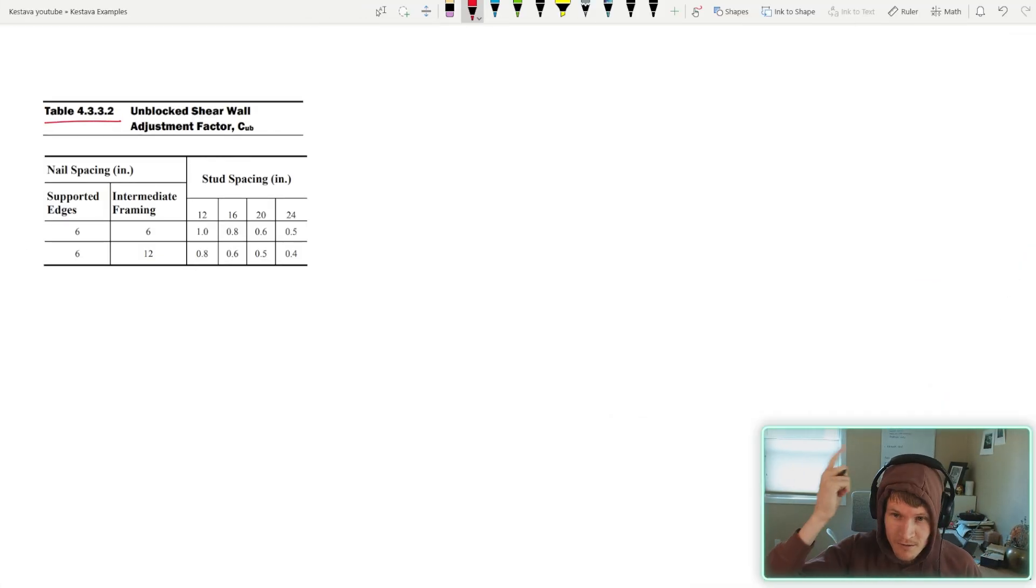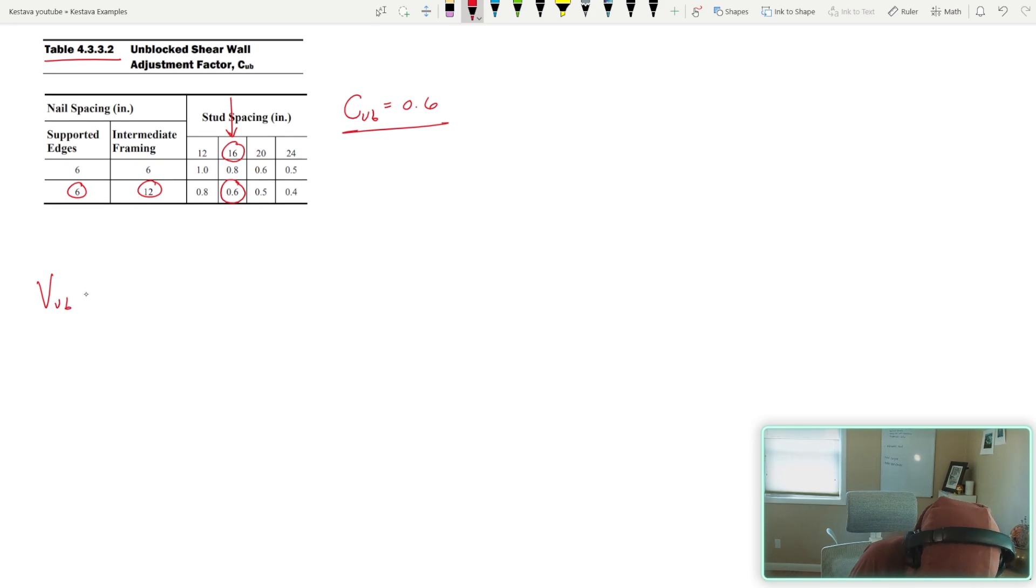With that, let's find C sub UB. We find ourselves at table 4.3.3.2. The default we picked was 6 inches on center edge nailing, and then 12 inch on center field is a common assembly. So we're 6 edge, field nailing is the same thing as intermediate nailing, 12 inches. Our stud spacing, as I was just mentioning, we land at 16 inches on center, so that's going to land us a C sub UB factor of 0.6.